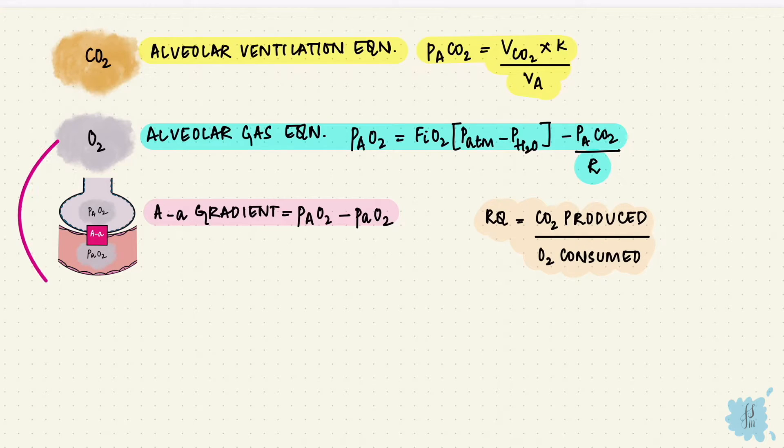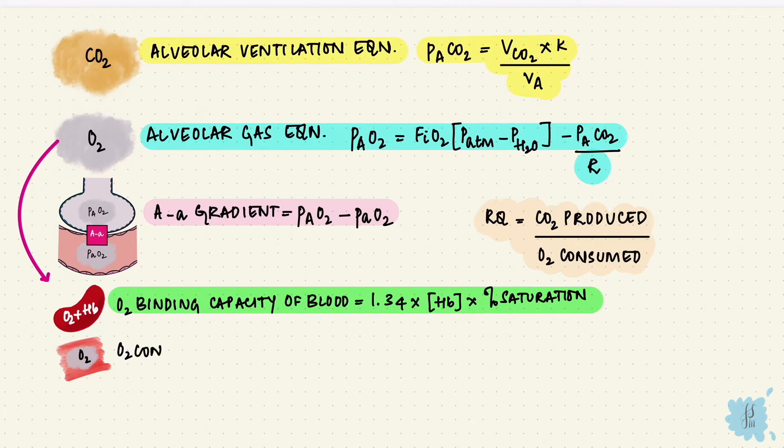In blood, oxygen can be dissolved or bound. The bound portion is to hemoglobin, and the oxygen binding capacity of blood is how much oxygen can bind to hemoglobin, which is normally 1.34 ml for 1 gram of hemoglobin into the hemoglobin concentration into the saturation. The oxygen content of blood is the total oxygen in blood, so it's the binding capacity along with the dissolved oxygen.